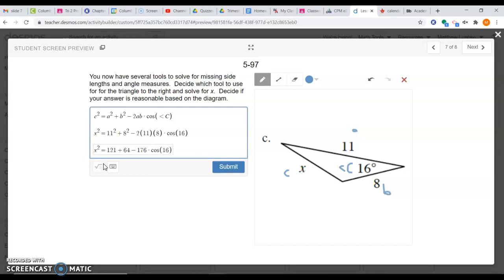This step here, I'll add these two together and leave the -176 times cosine of 16 alone. So I end up getting x². Adding those two together, I get 185 - 176 cos(16).